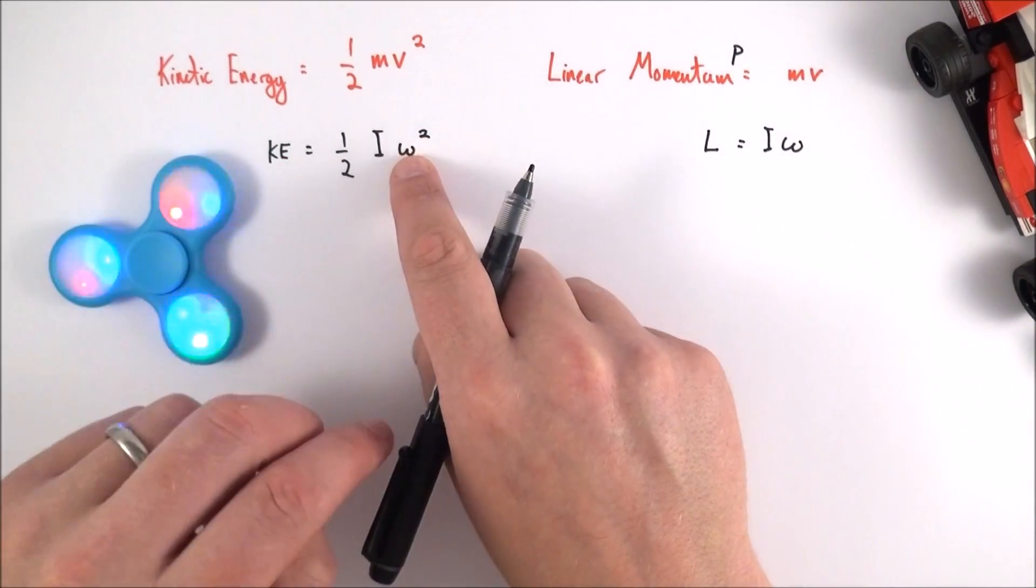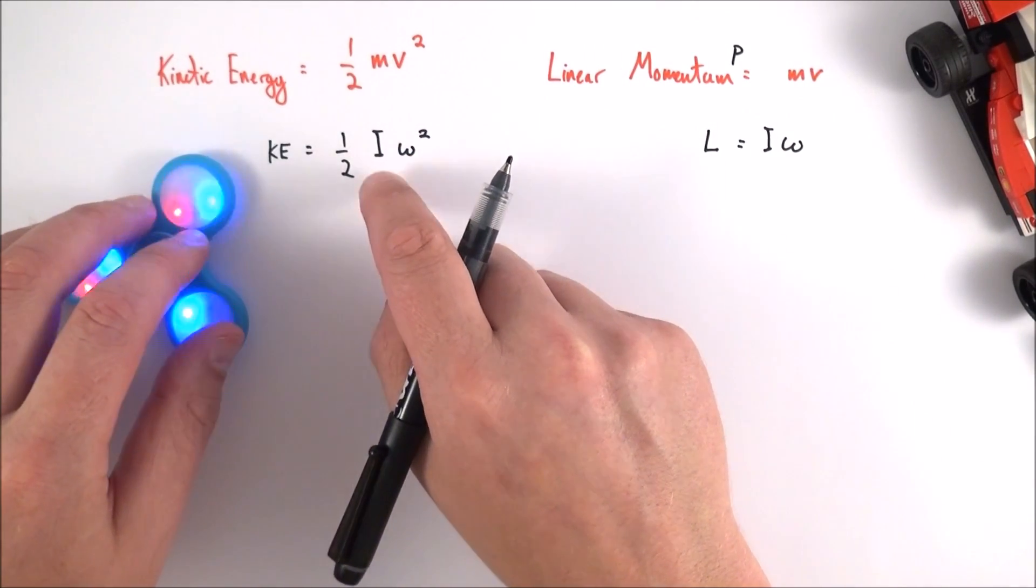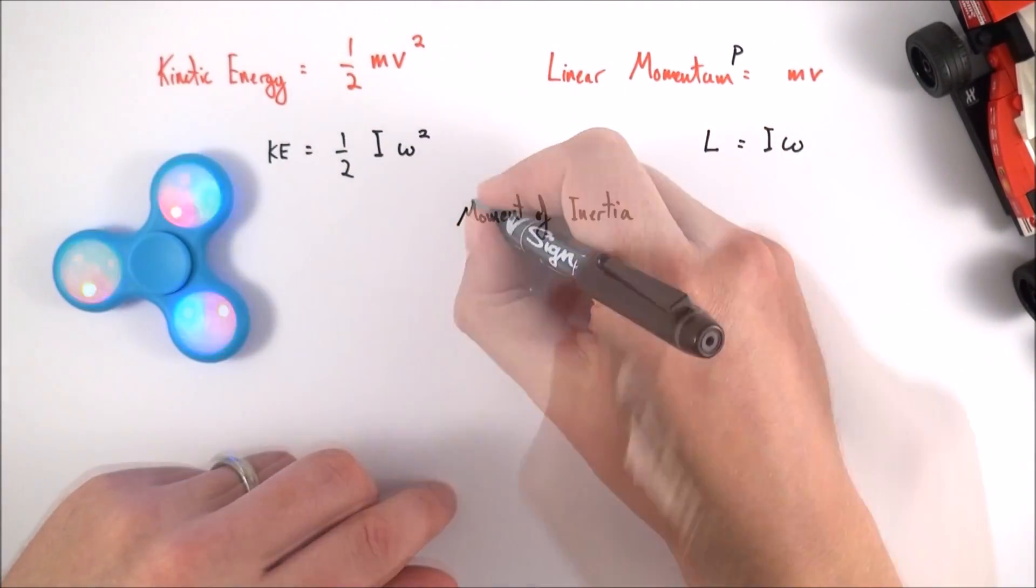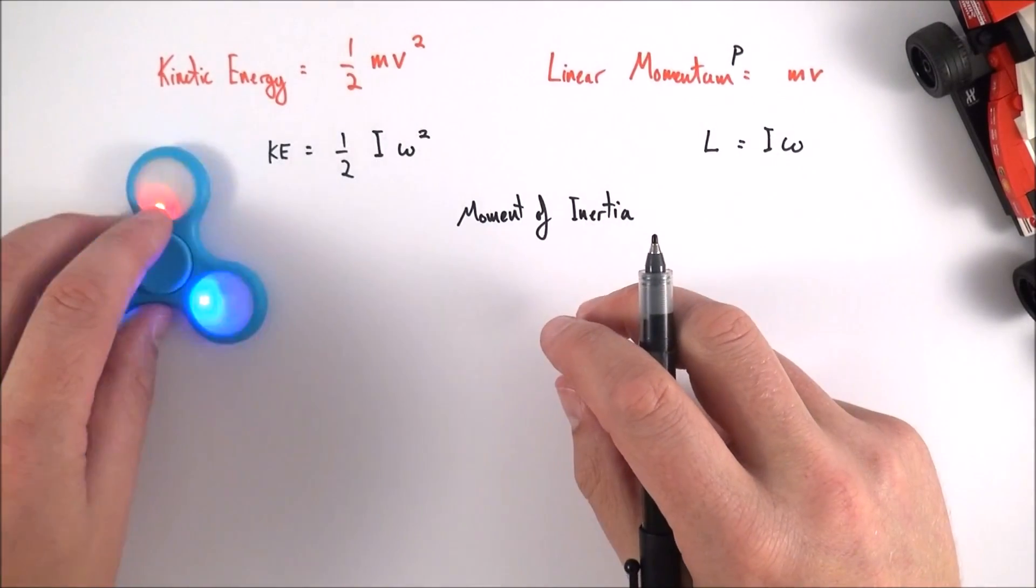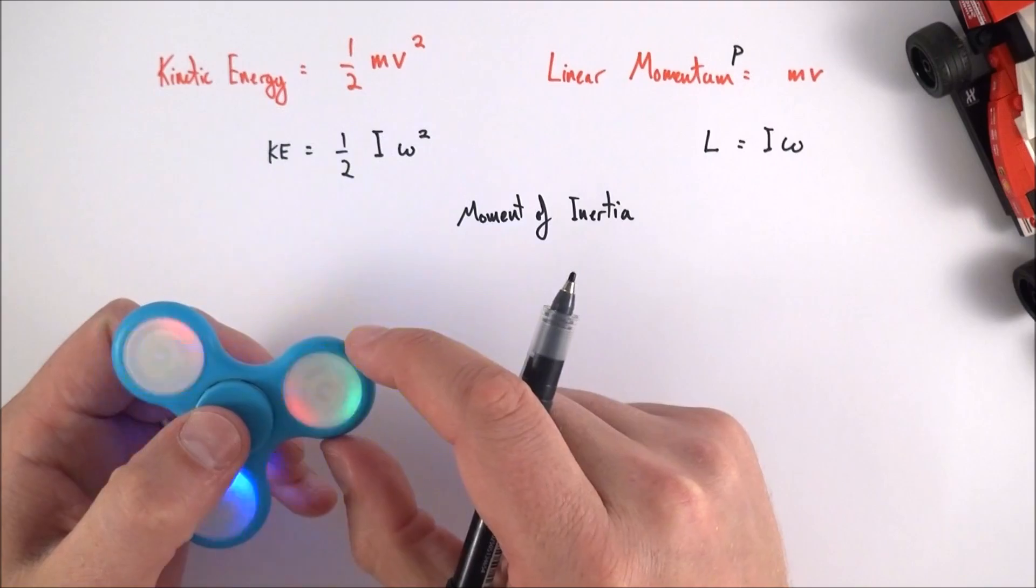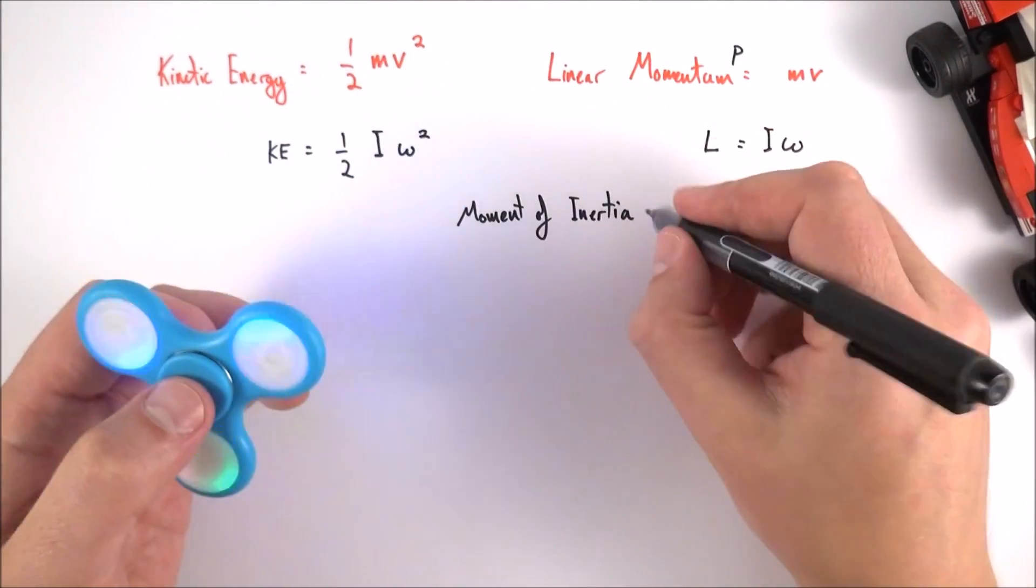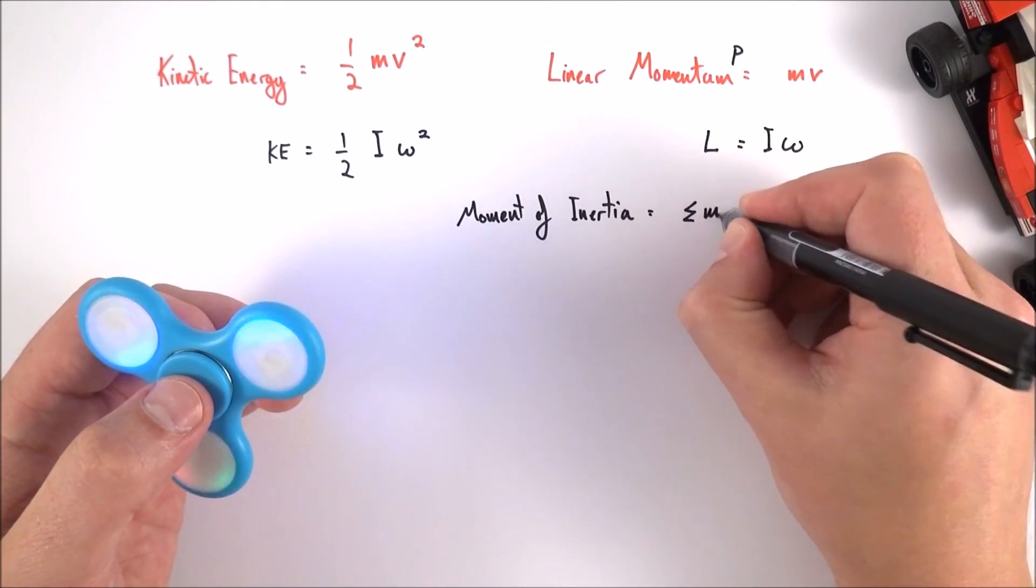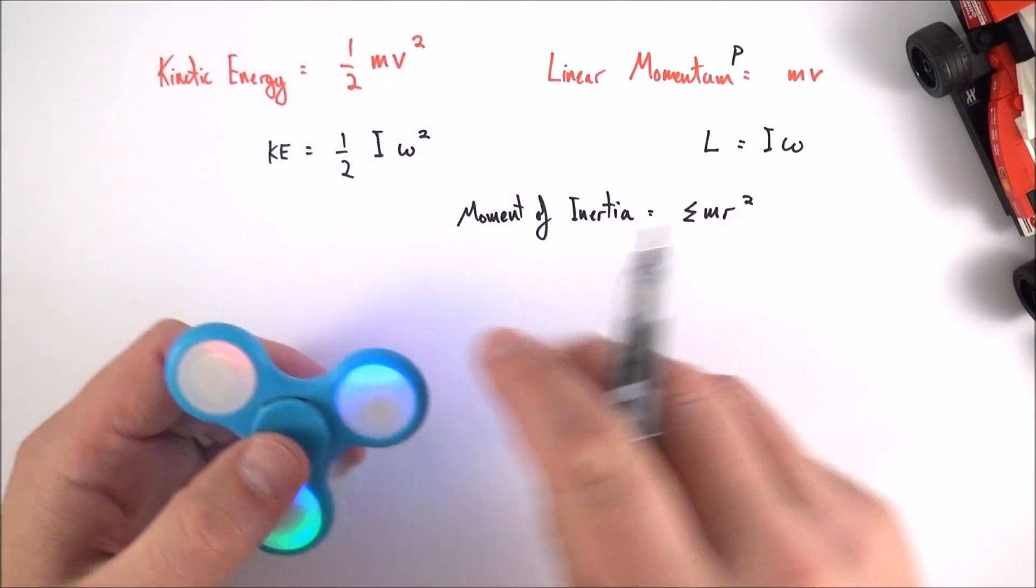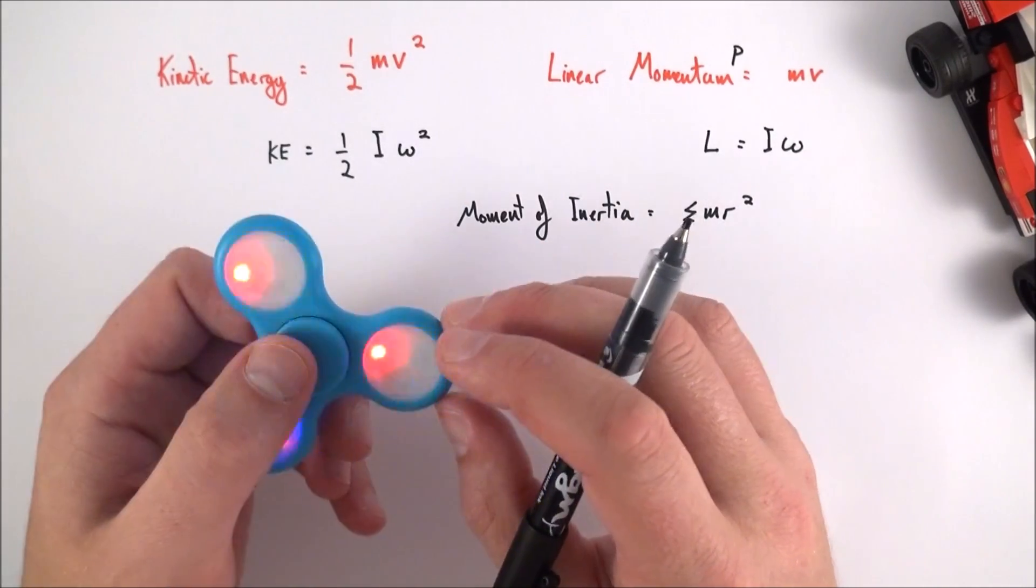So we can increase omega which will make it spin for longer but we can also increase I and this I is something that you might not have heard of before and it's called the moment of inertia. Now this moment of inertia is effectively not just the mass of the object but how the mass is distributed around the center of rotation. In actual fact you can work it out for any shape and it's equal to the sum of mr² where you've got all the masses at their distance from the center.